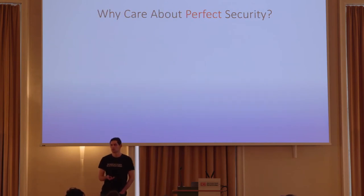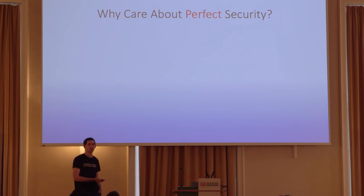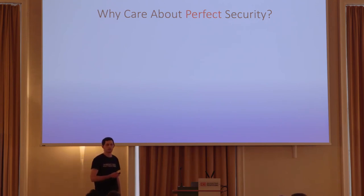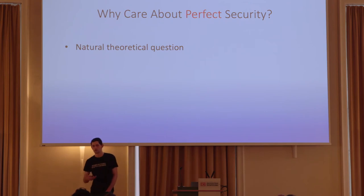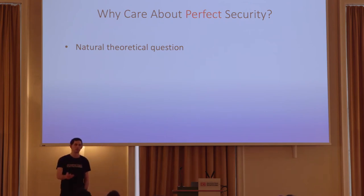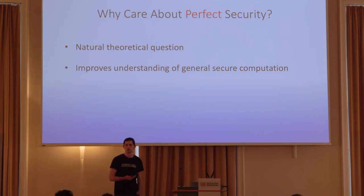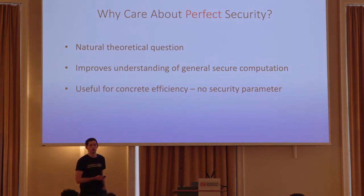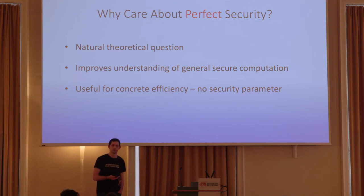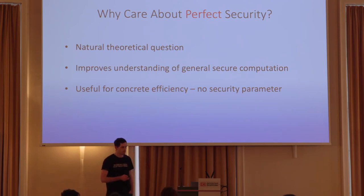Why should we care about perfect security? If we have statistical security, which is still unconditional and holds against any unbounded adversary, the security holds essentially forever — so why should we care? Well, first it's very natural: if we have statistical security, can we push it further and get no error at all? This is also part of secure MPC, so we need to understand this setting. And on the practical side, if we can construct efficient protocols with perfect security, their efficiency is concrete, since we eliminate the dependency on the security parameter.